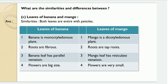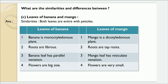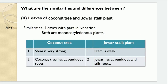Let us see the similarities and differences between leaves of banana and mango. Similarities: both leaves are entire with petioles. Differences: banana is a monocotyledonous plant but mango is a dicotyledonous plant. Roots are fibrous in banana and tap roots in mango. Banana leaf has parallel venation but mango leaf has reticulate venation, and flowers are big in banana and very small in mango.